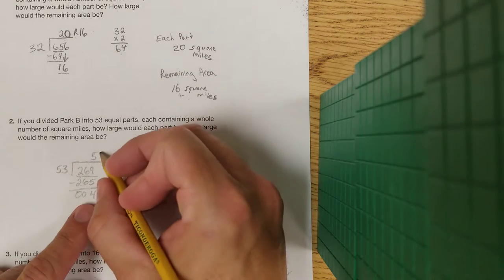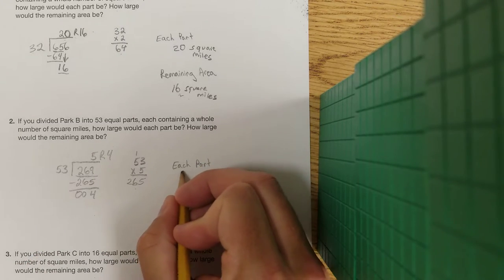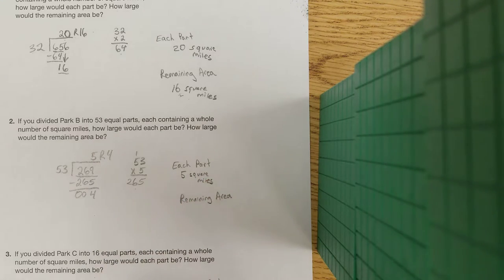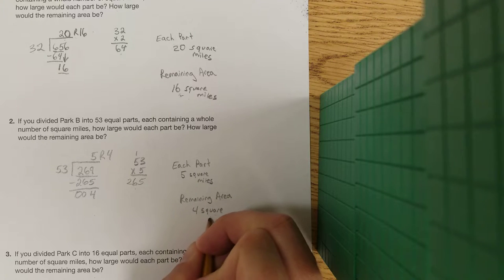So on this one I have 5 with a remainder of 4, so each part is going to be 5 square miles, and our remainder is going to be 4 square miles.